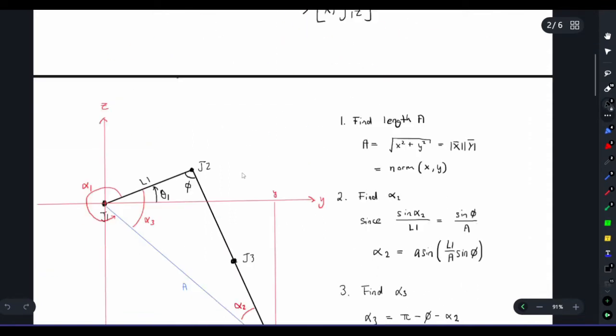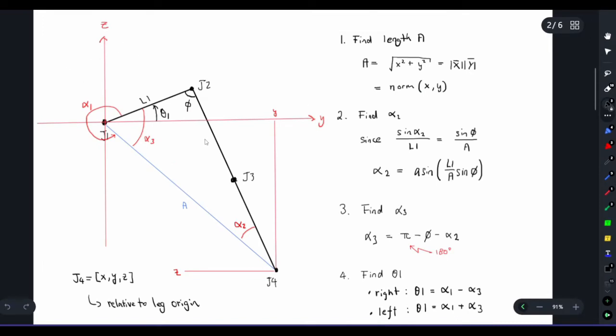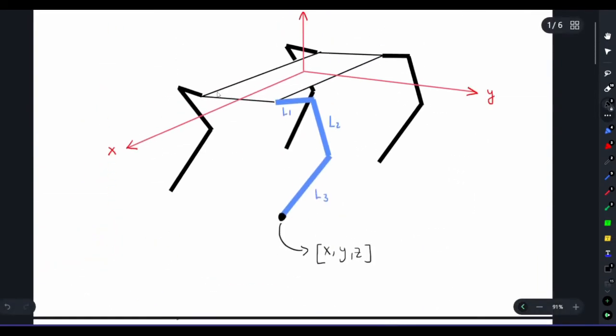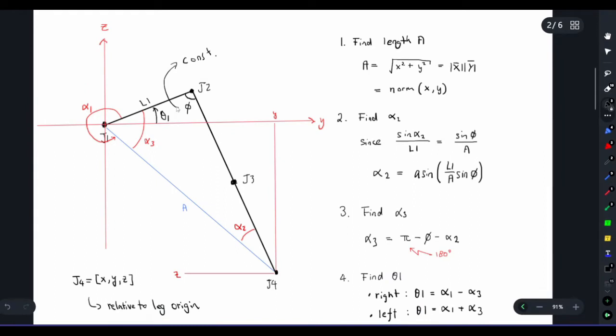We will firstly be looking from the front side of the robot. We are looking at one of the robot's legs from the front, so we have y and z axis here. We can see I've drawn in a few angles: alpha 1, alpha 2, and alpha 3, and also theta 1. Note that phi is a fixed constant value and it depends on the configuration of your robot. In my case this is a 90 degree angle but it might be different for your robot.